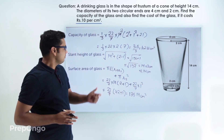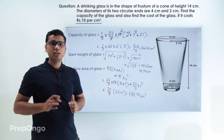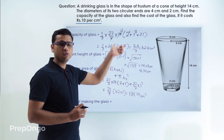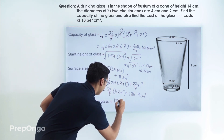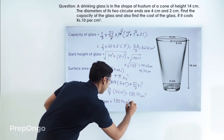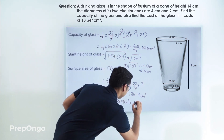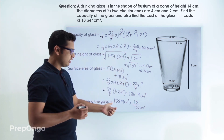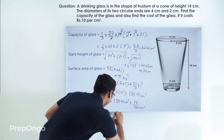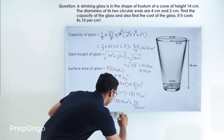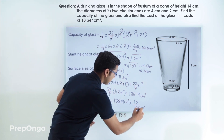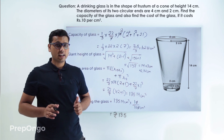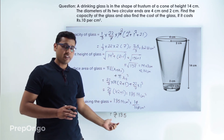Now we will multiply by the cost to get the net cost of the glass. The cost of making this glass will be the surface area multiplied by the cost rate, so 135.14 centimeters square into rupees 10 per 100 centimeters square. This comes out to be rupees 13.5. So we can say that this glass will cost us 13.5 rupees.